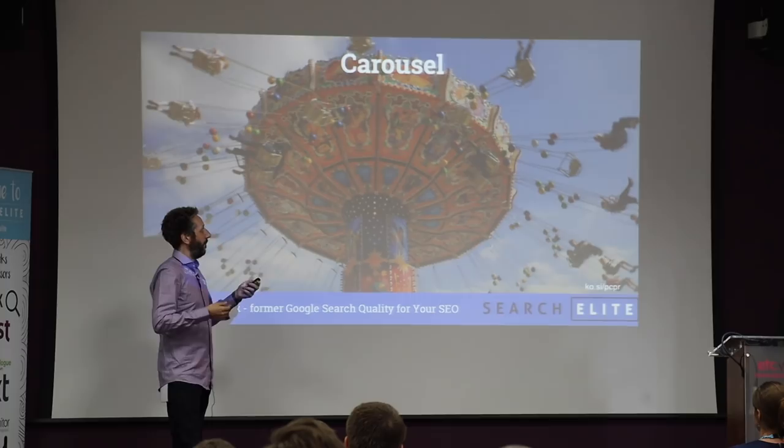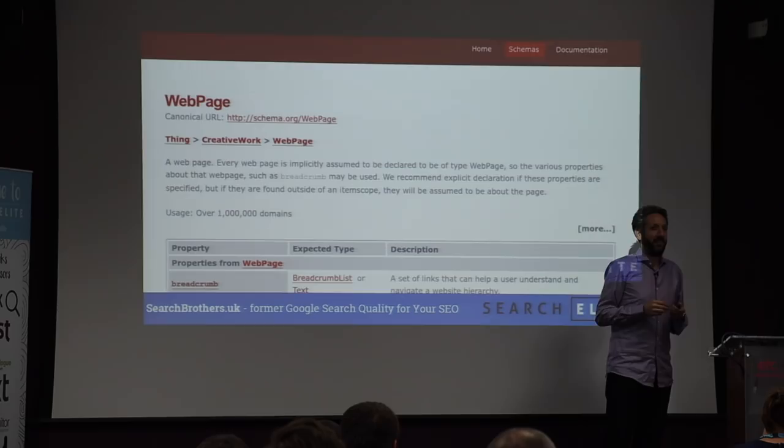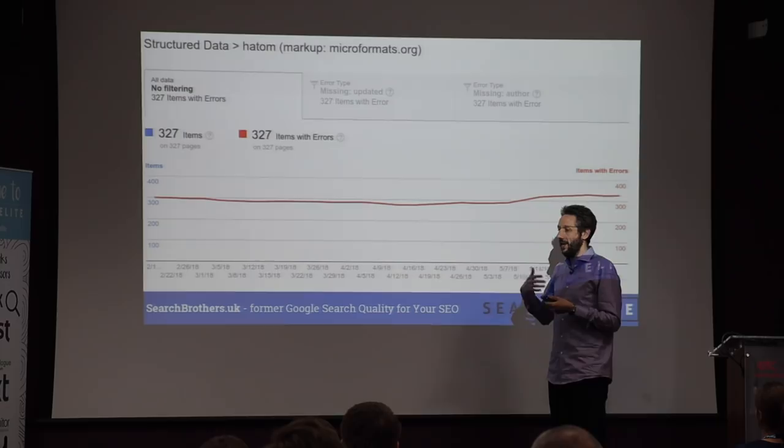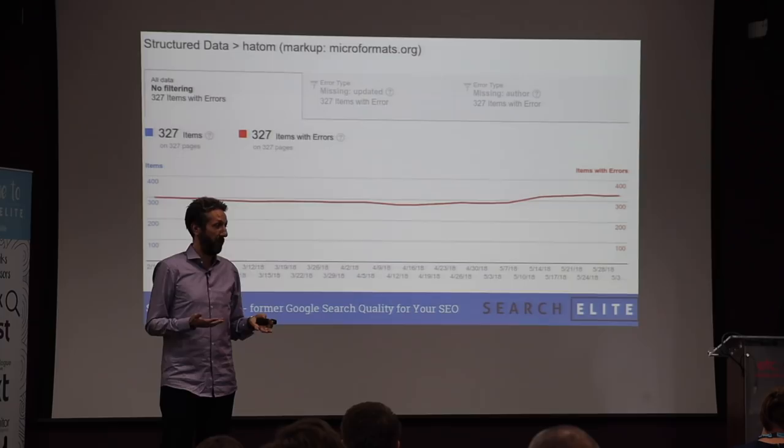So which ones can we ignore? Well, we can safely ignore web page — that's one that pretty much no one uses except WordPress. We have these item entries that tend to throw a lot of errors, and often again this comes because of WordPress. We can remove these. If you have a WordPress site, just update your theme — you'll get rid of it — and then implement one of the other schemas.